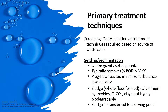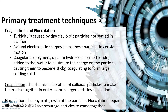Primary treatment is what happens at the start of the process, such as screening to remove large objects, or relying on settling or sedimentation to occur. It could also involve coagulation or flocculation, where, through the addition of chemicals, larger particles are formed, which would make physical separation easier.